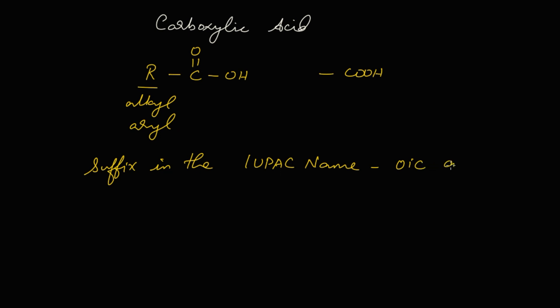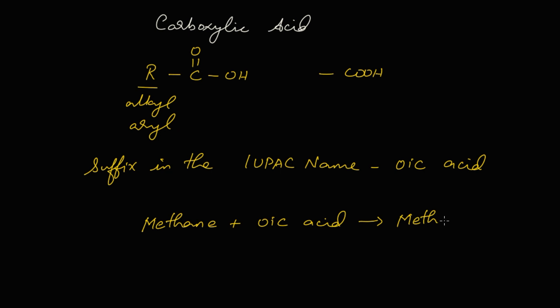If it is a carboxylic acid, the suffix in the IUPAC name is 'oic acid'. For example, if this carboxylic acid is attached to methane — methane plus oic acid — it forms methanoic acid. Come on, let's learn some examples for carboxylic acid.